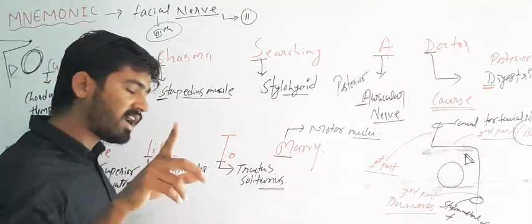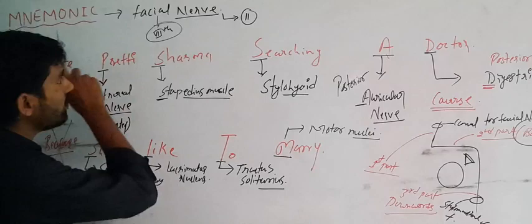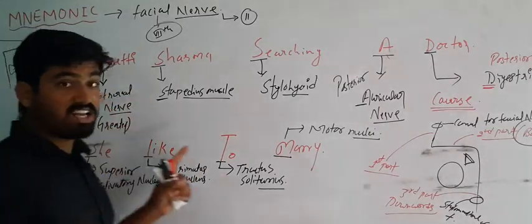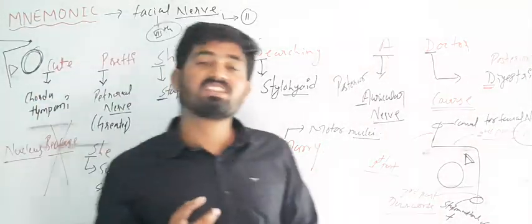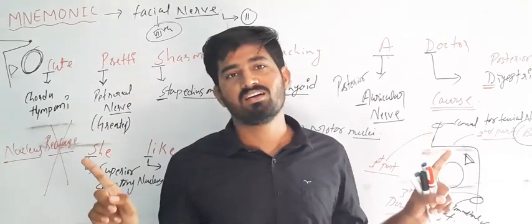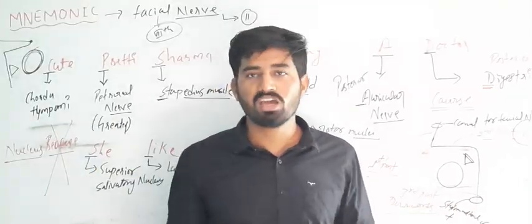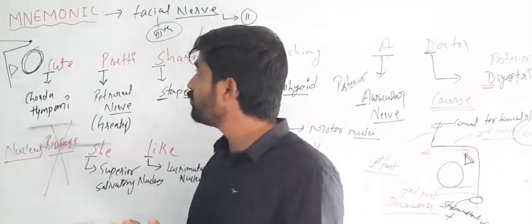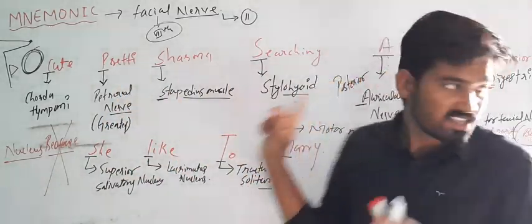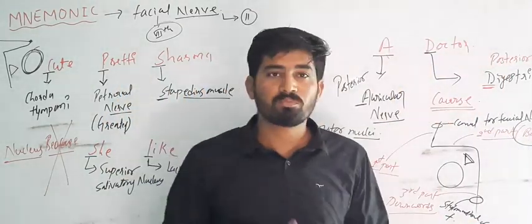In the next video I will explain the full facial nerve. So the mnemonic is: 'Cute Preeti Sharma searching a doctor, because she likes to marry.' I hope you can remember the nucleus, the branches, and the course. Thank you.